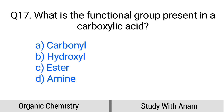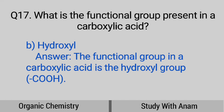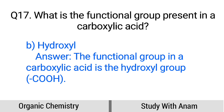Question number 17. What is the functional group present in a carboxylic acid? Option A: Carbonyl, B: Hydroxyl, C: Ester, D: Amine. The correct option is option B, Hydroxyl. The functional group in a carboxylic acid is the hydroxyl group.